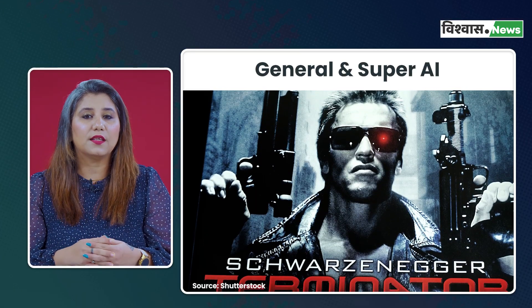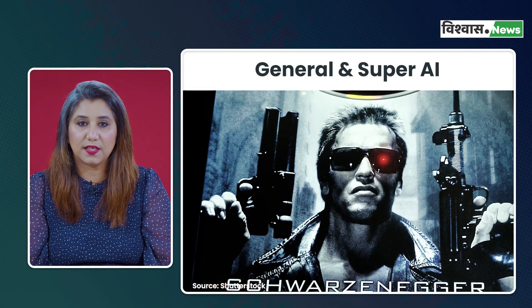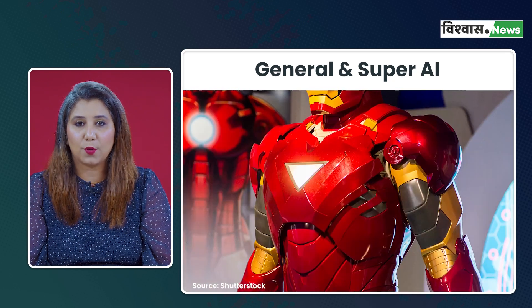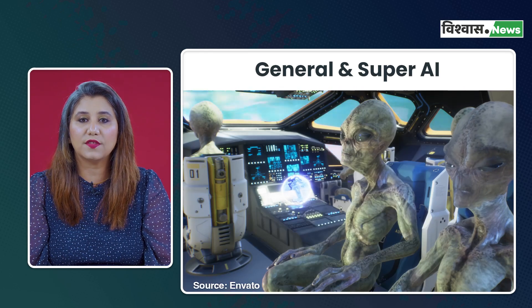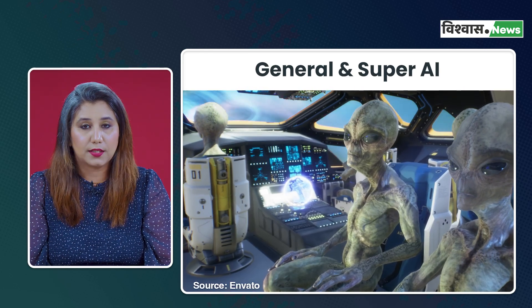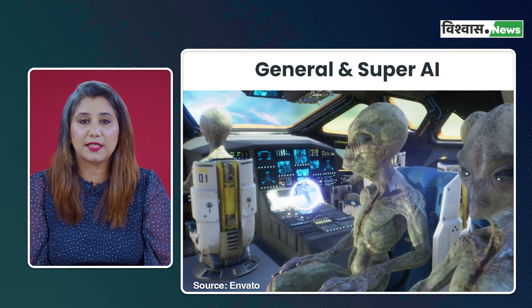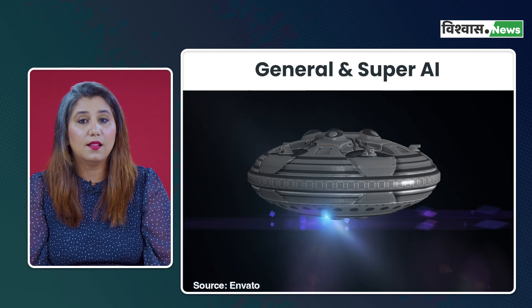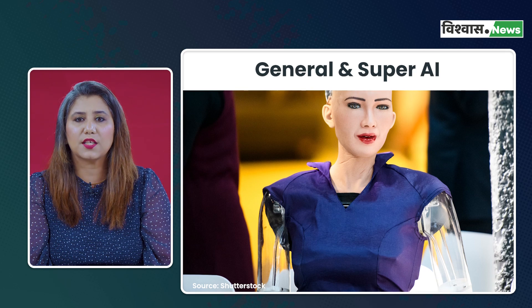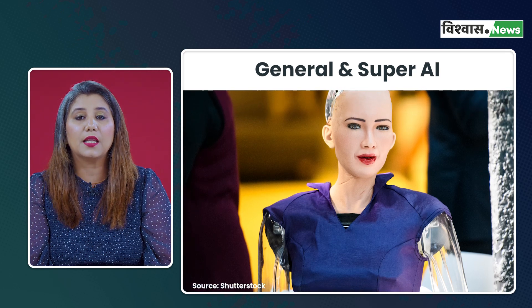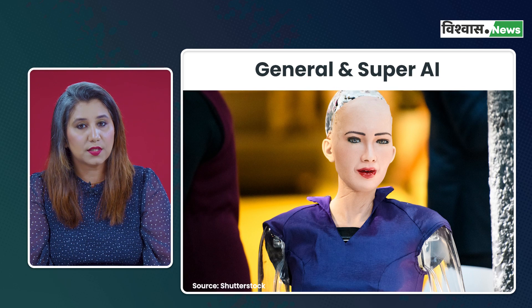We've all seen the Terminator and Iron Man movie series and appreciated Arnold's and Jarvis's roles. The other two types — artificial general intelligence and artificial super intelligence — are what we often see in science fiction. It can be an alien or a machine with human-like intelligence that can understand, learn and perform any intellectual task a human can. However, we are not there yet. No machine currently exhibits this level of intelligence — not even Sophia, who is an advanced AI robot, but her capabilities are limited to specific programmed responses and interactions.